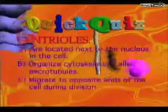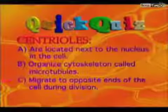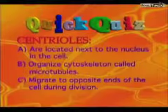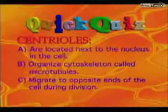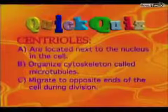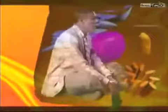Here's the final quick quiz question. Centrioles: A, are located next to the nucleus in the cell; B, organize cytoskeleton called microtubules; or C, migrate to opposite ends of the cell during division. In this case, all three answers are correct. Well, that's all for me. So now let's go back to see how Ryan's going to get out of this cell.